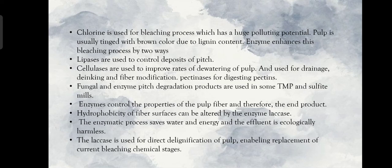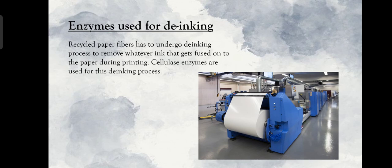Pectinases are used for digesting pectins. Fungal and enzyme pitch degradation products are used in some TMP and sulfite mills. Enzymes control the properties of the pulp fiber and therefore the end product. Hydrophobicity of fiber surfaces can be altered by the enzyme laccase. The enzymatic process saves water and energy, and the effluent is ecologically harmless. Laccase is used for direct de-lignification of pulp, enabling replacement of current bleaching chemical stages.